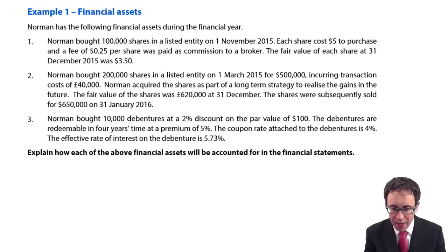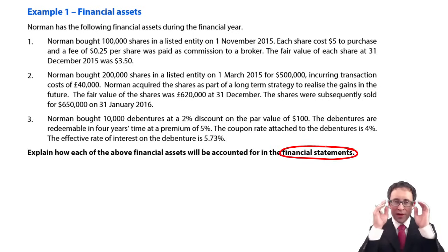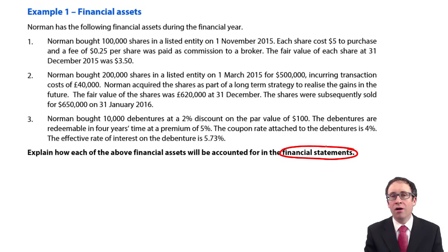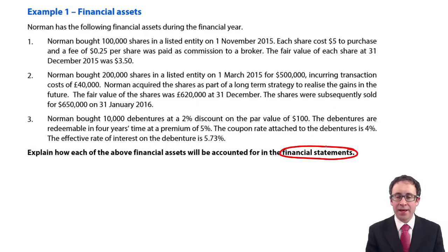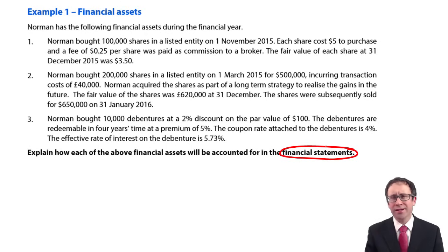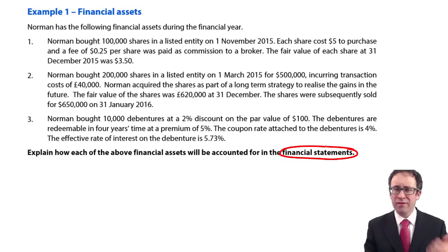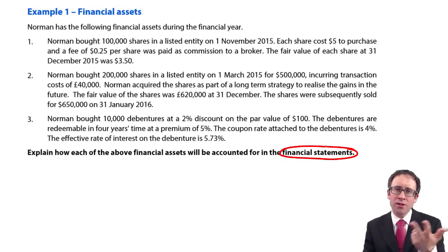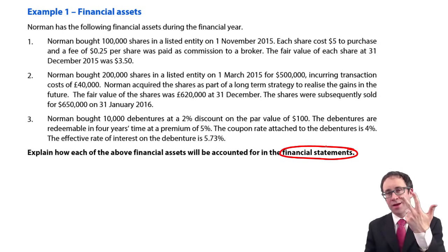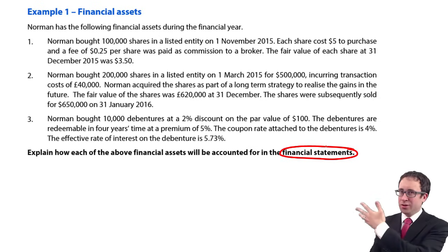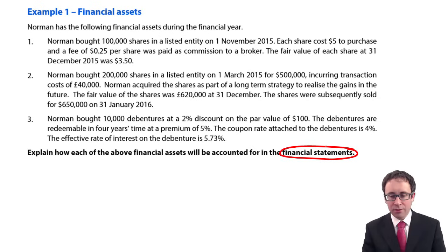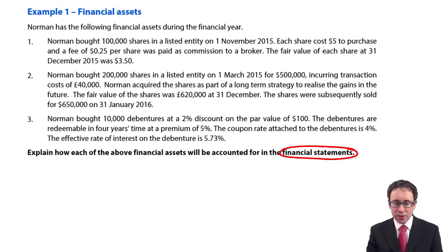We need to look at how to account for them. I'm going to focus more on the accounting entries because you have the explanation in the back in the answer. We've got three separate scenarios — we'll deal with each one individually. We have fair value through profit or loss, fair value through other comprehensive income, and amortised cost as our three categories of financial asset. Let's deal with each of them individually.